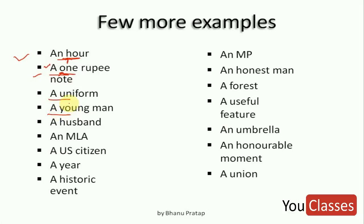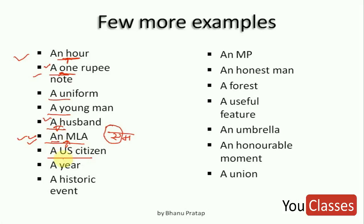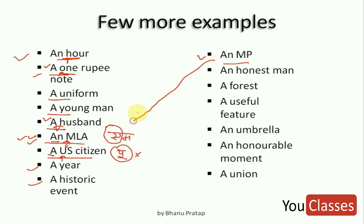A uniform, a university — same rule. A husband — starts with H and pronunciation is 'Husband', consonant sound, so 'a' is correct. An MLA — students think it starts with M so they use 'a', but that's wrong. M is pronounced 'Em', which starts with a vowel sound, so we use 'an MLA'. A US citizen — written with U, but pronounced 'Yu', a consonant sound, so 'a' is correct. An MP is similar to an MLA. An honest man, an arm, a forest, a useful feature, an umbrella, an honorable moment, a union.